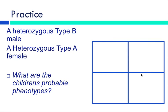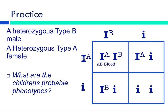One more. Heterozygous type B. Heterozygous type A. Heterozygous, big I, little i. I put a B with the I. Heterozygous, big I, little i. I put an A with the I. I do the cross. What are the probable phenotypes? Well, now I actually have a 25, 25, 25, 25. I got a one in four chance for any of the four blood types. I could be AB. I could be A. I could be B. Or I could be O blood type.